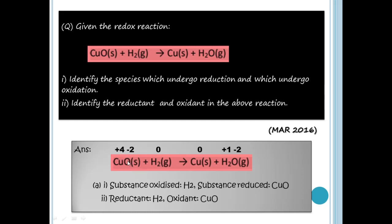The Cu in CuO: hydrogen is +1, oxygen is -2. Cu in CuO is +2. In the product, Cu is in the free state so it is 0 — Cu is reduced. Oxygen stays at -2 on both sides — no change.